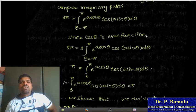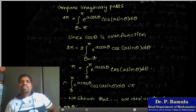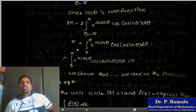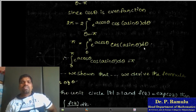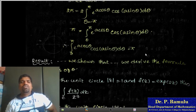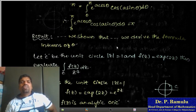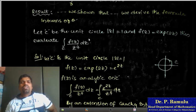Since cosθ is an even function, we can write this as 2π = 2 times the integral from 0 to π of e^(a cosθ) cos(a sinθ) dθ. The factor of 2 cancels, giving: integral from 0 to π of e^(a cosθ) cos(a sinθ) dθ = π. This proves the required result.